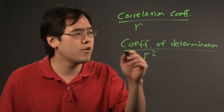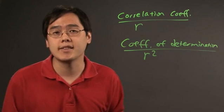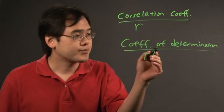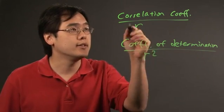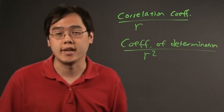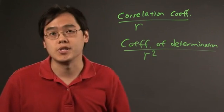What the coefficient of determination helps you determine is the percentage of data that is closest to the best fit line. So in a sense, the coefficient of determination piggybacks off the correlation coefficient's data and helps you make additional inferences.